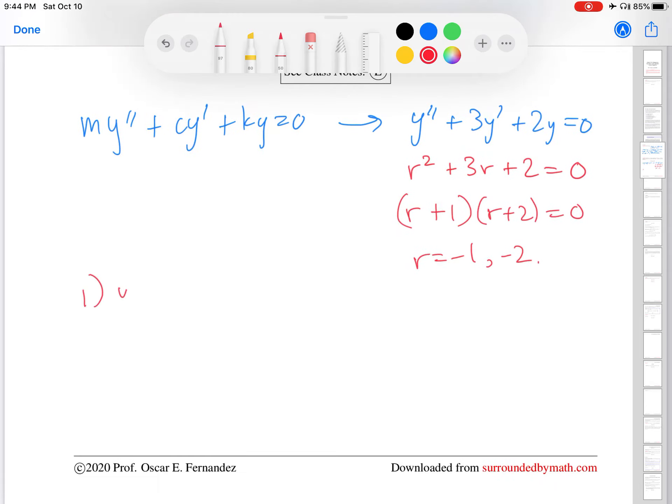That gives rise to the two solutions to the ODE, e to the minus t, and e to the minus 2t. And then based on our ODE theory, that gives us a general solution that looks like this.